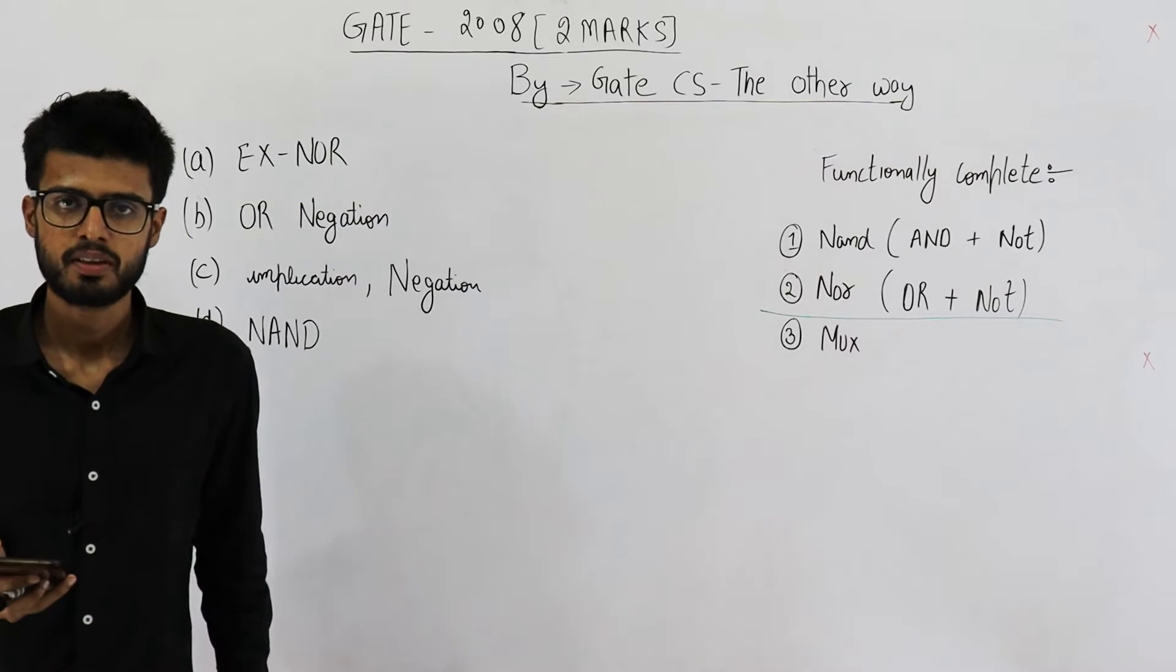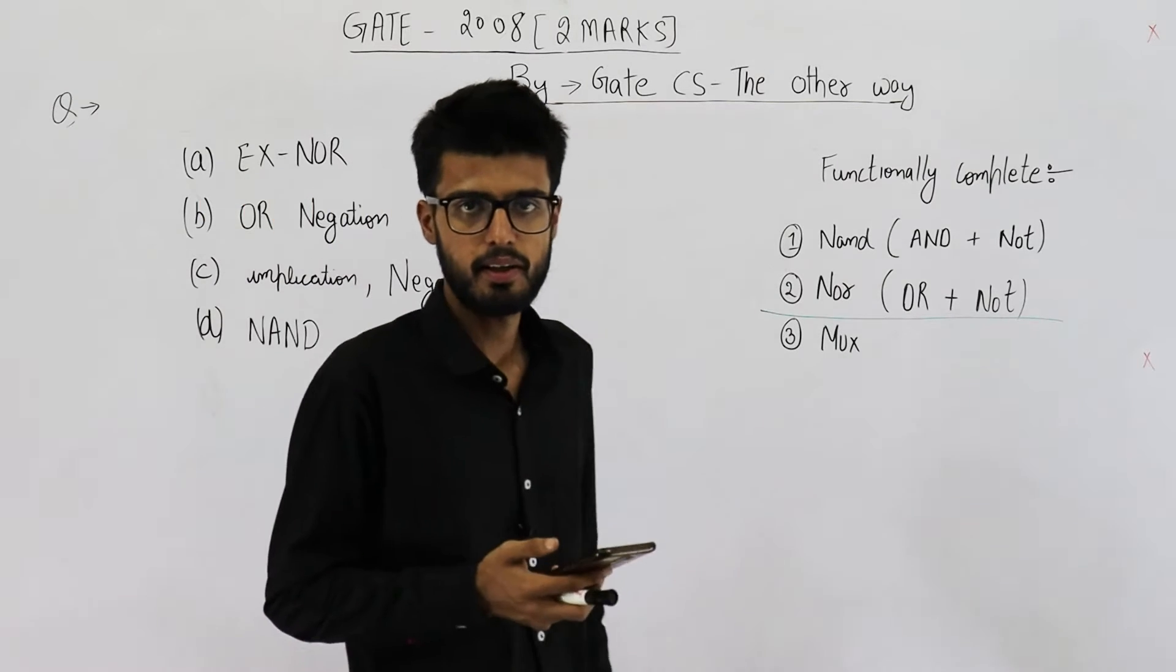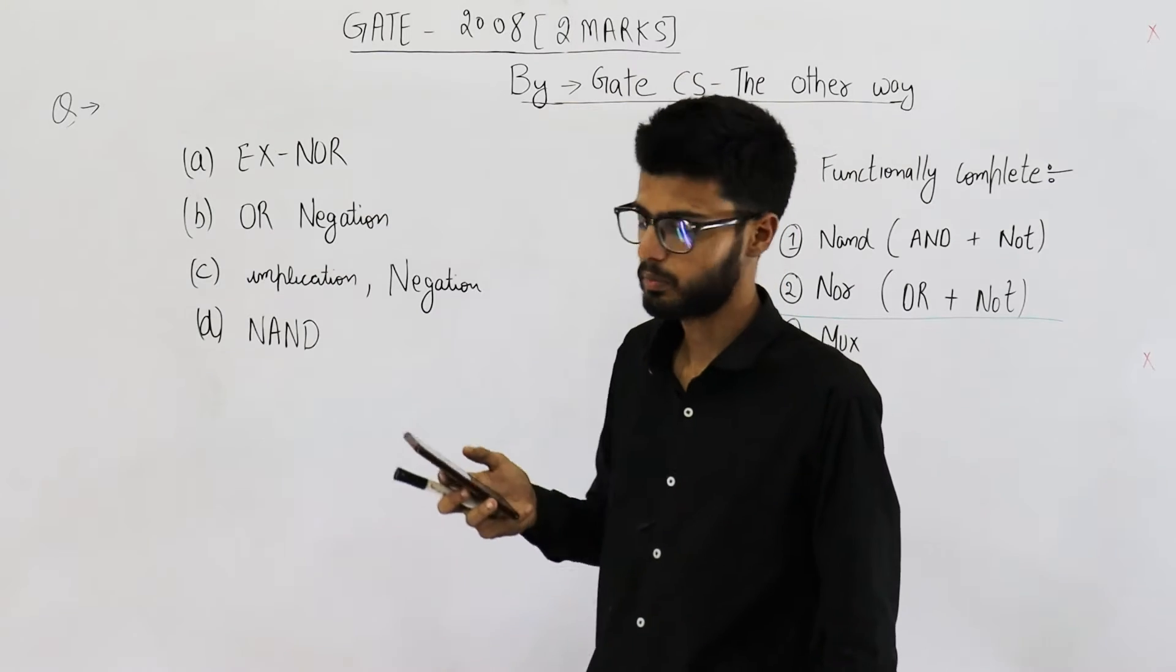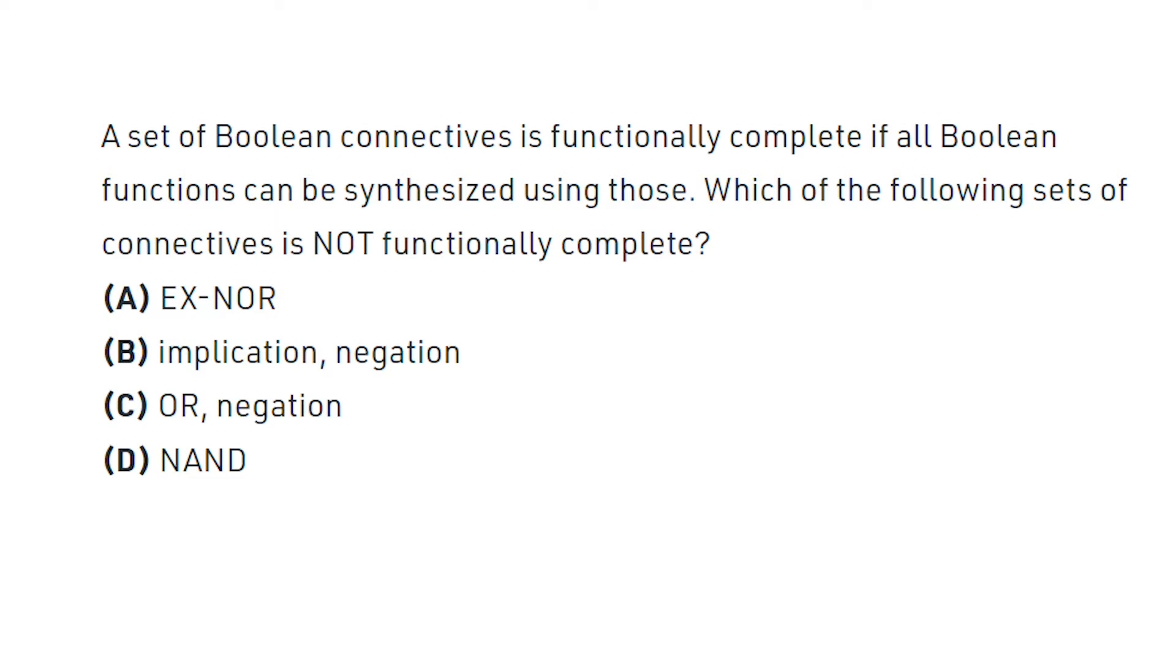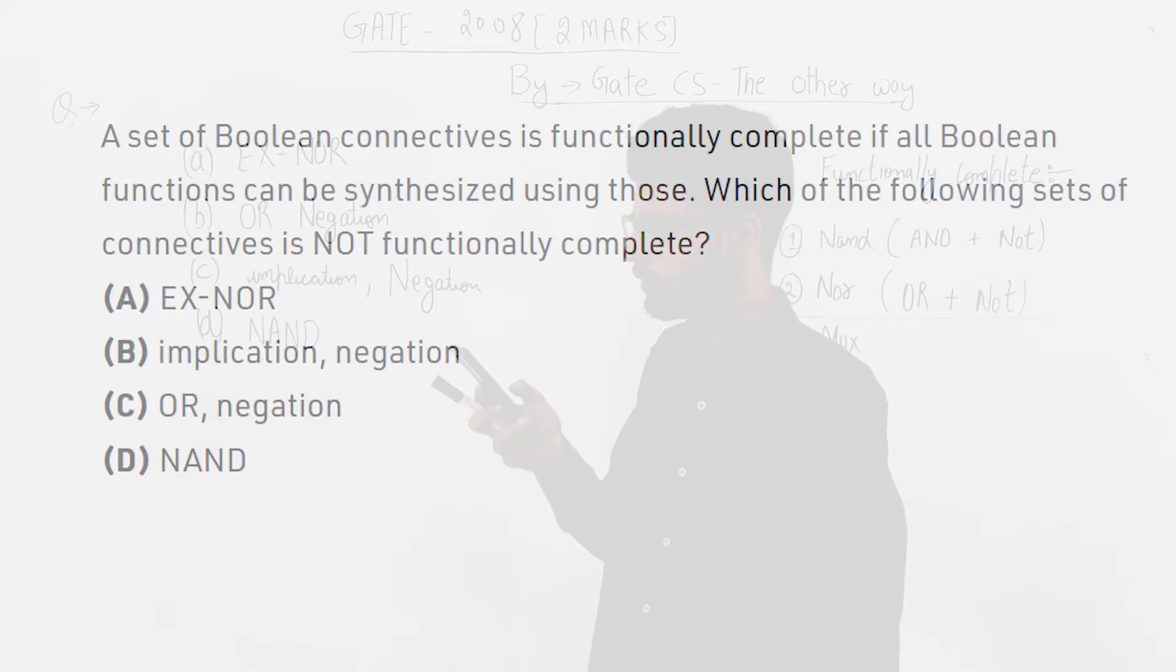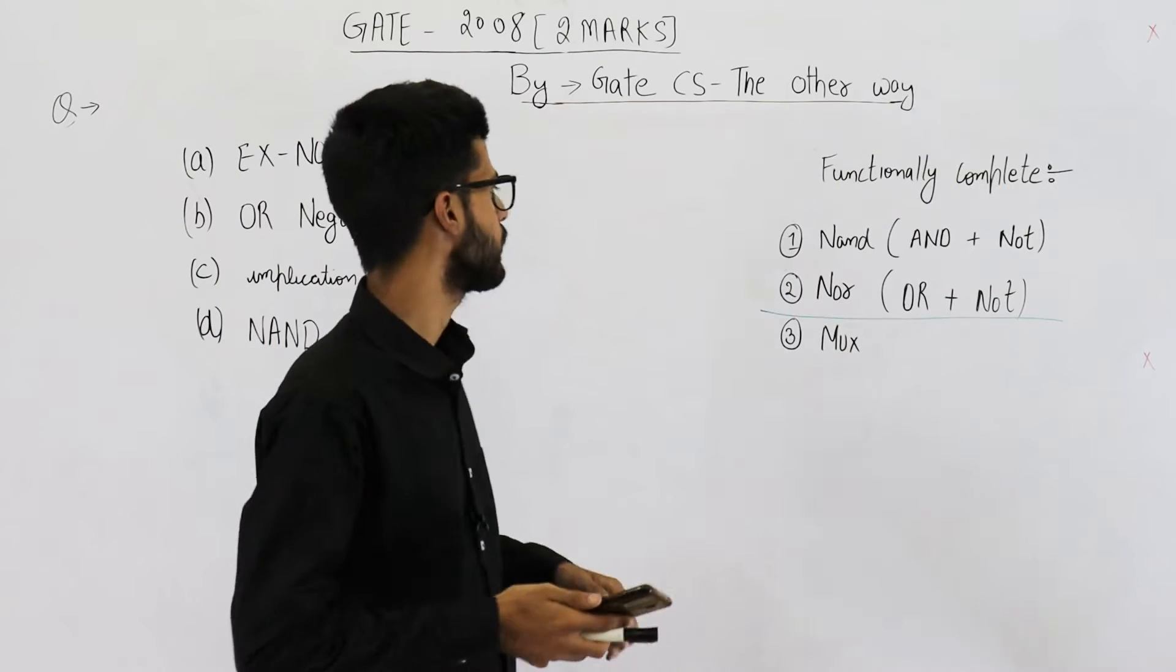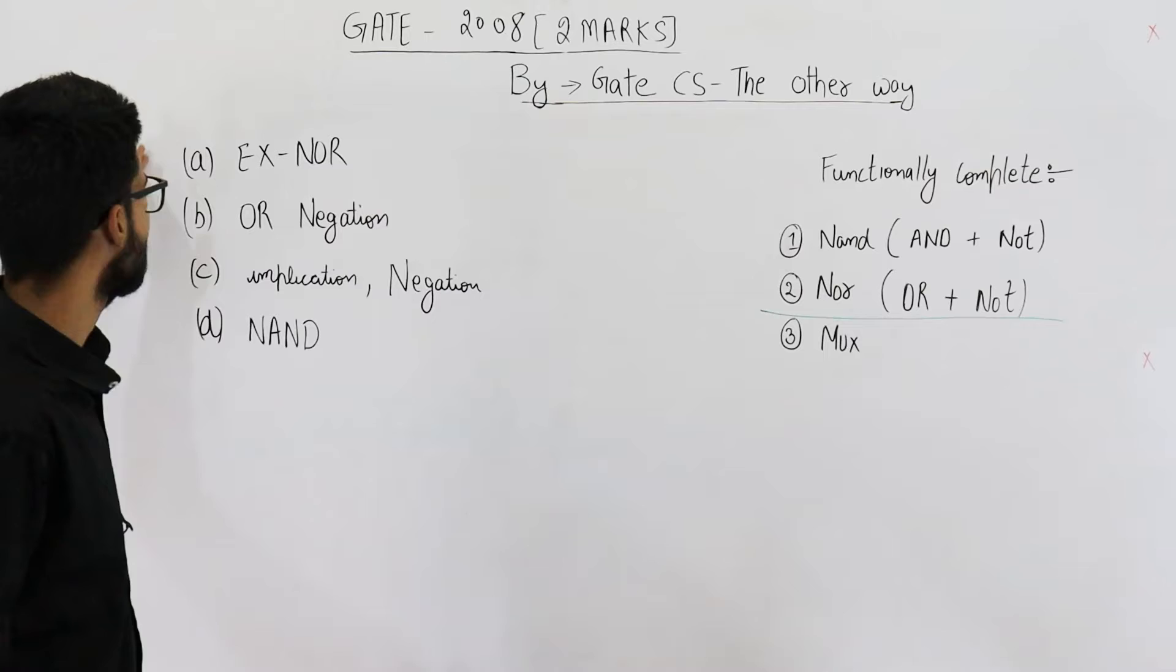Welcome back students. This question is from GATE 2008 exam. A set of boolean connectives is functionally complete if all boolean functions can be synthesized using those. Which of the following sets of connectives is not functionally complete?